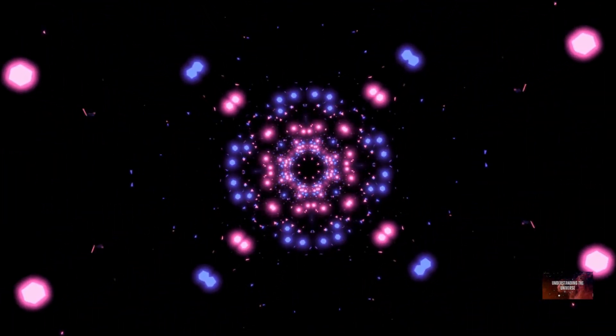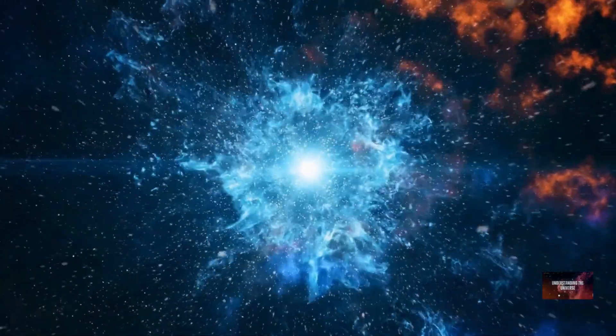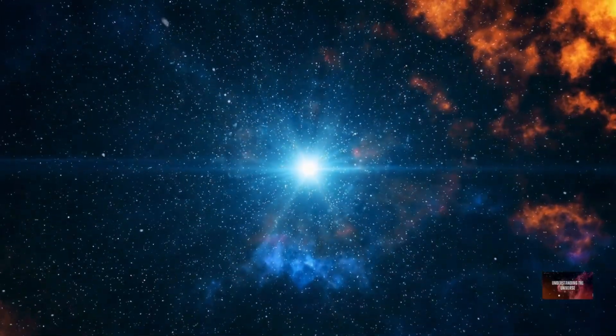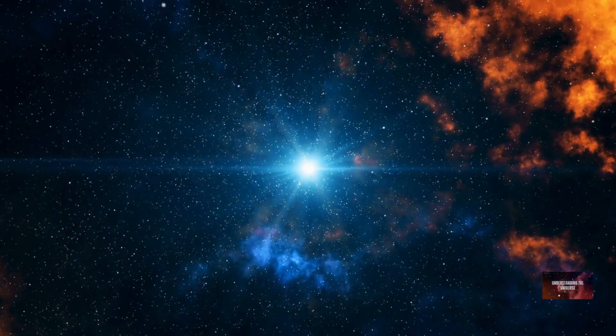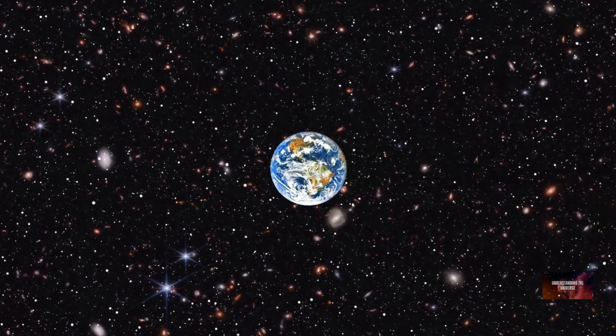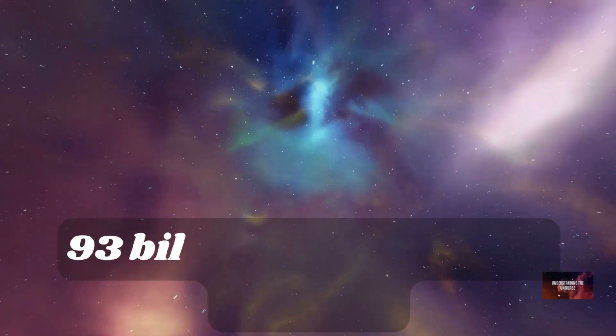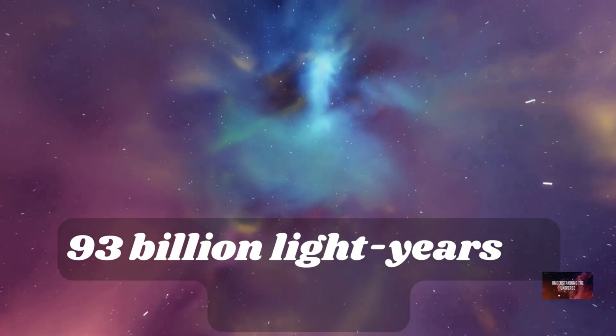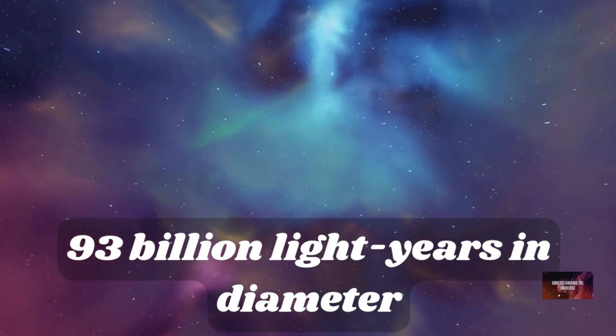Our cosmic journey begins with what we can actually see. The observable universe is the portion of the cosmos from which light has had enough time to reach us since the Big Bang. It's our cosmic bubble, a sphere centered on Earth. This incredible sphere stretches approximately 93 billion light-years in diameter.